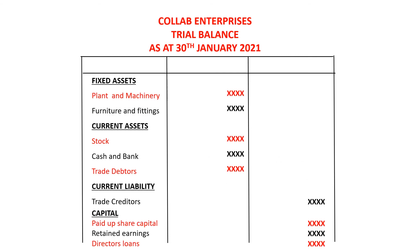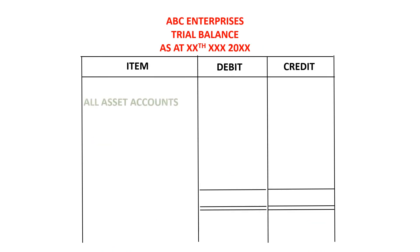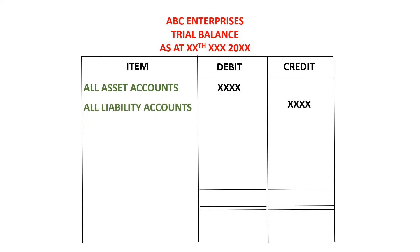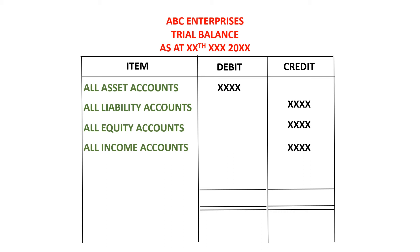So the overall picture of how a trial balance will look like: we will have the debit side, where all accounts that have a debit balance will have their balances written in that column. Then we have the credit side, where all accounts with credit balances will have their balances written in that column. The items will be written in the items column, as you're seeing on your screen. The general rules are: all asset accounts will have debit balances, all liability accounts will have credit balances, all equity accounts will have credit balances, all income accounts will have credit balances, and all expense accounts will have debit balances.